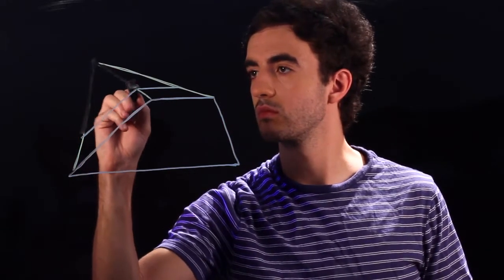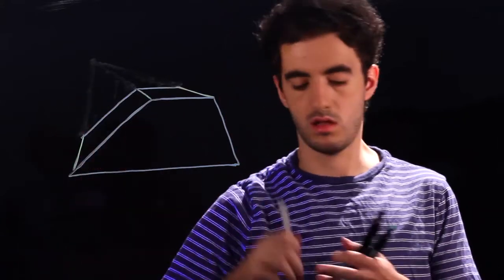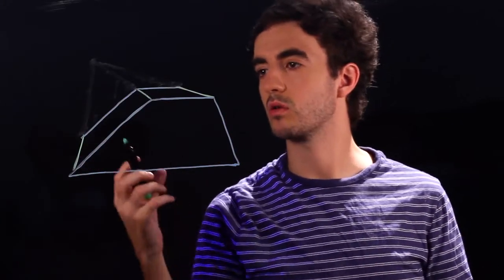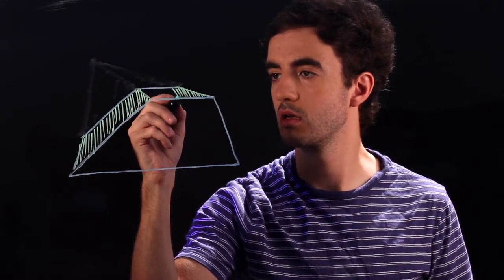And once you have that, erase your vanishing point and these lines that you don't need anymore. And this will give you a 3D trapezoid. And after you have that, you want to go back in and do some shading. So we'll shade this side and we'll shade the top. And that is how you draw a 3D trapezoid.